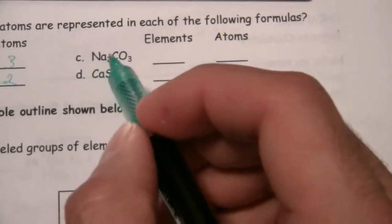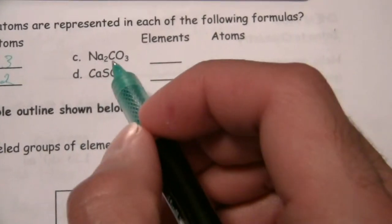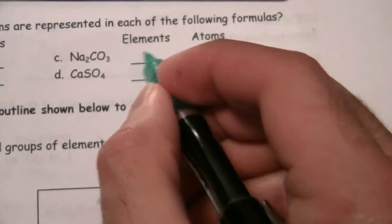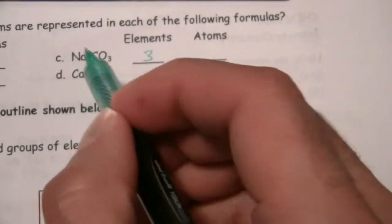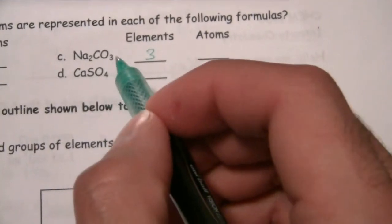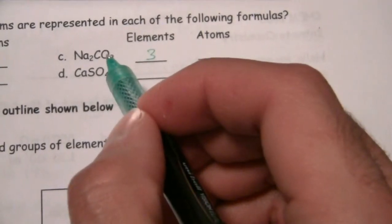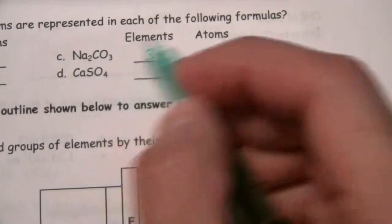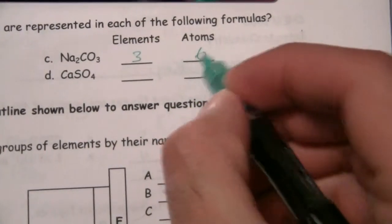Here we have Na is sodium and carbon and oxygen. Three elements, and we have two atoms of sodium, one atom of carbon, and three atoms of oxygen. So three, four, five, six atoms total.